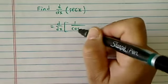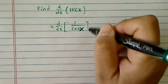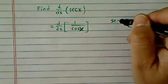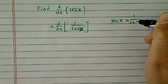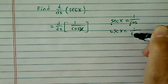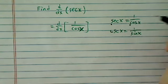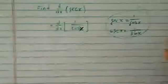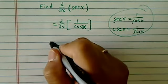Secant x is 1 over cosine x. Now I always tell my students secant of x equals 1 over cosine, so c and s is always reversed, because secant of x is 1 over sine of x. That's a little tip on the side. I'll use the chain rule here.